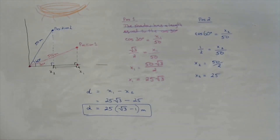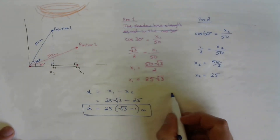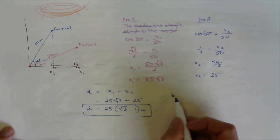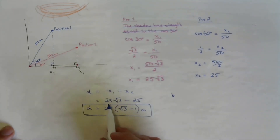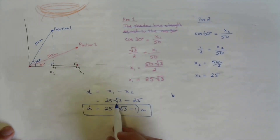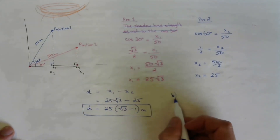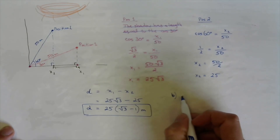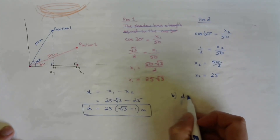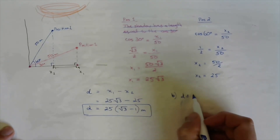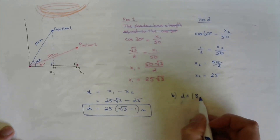For part b, we get an approximation to the nearest tenth of a meter. Type 25 times √3 minus 25 into your calculator, and you get that the distance is approximately 18.3 meters.